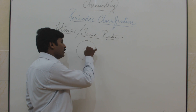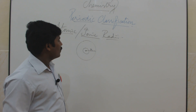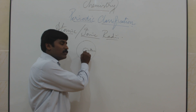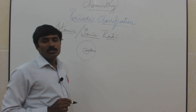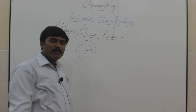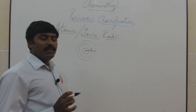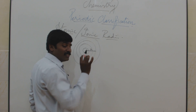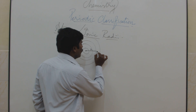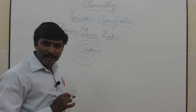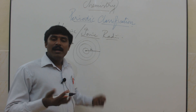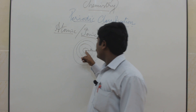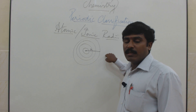The middle of the atom is the nucleus. In chemistry, the atomic radius is the distance between the centre of the nucleus to the outermost shell — which may be the K, L, M shell, or whatever. That distance is called the atomic radius.